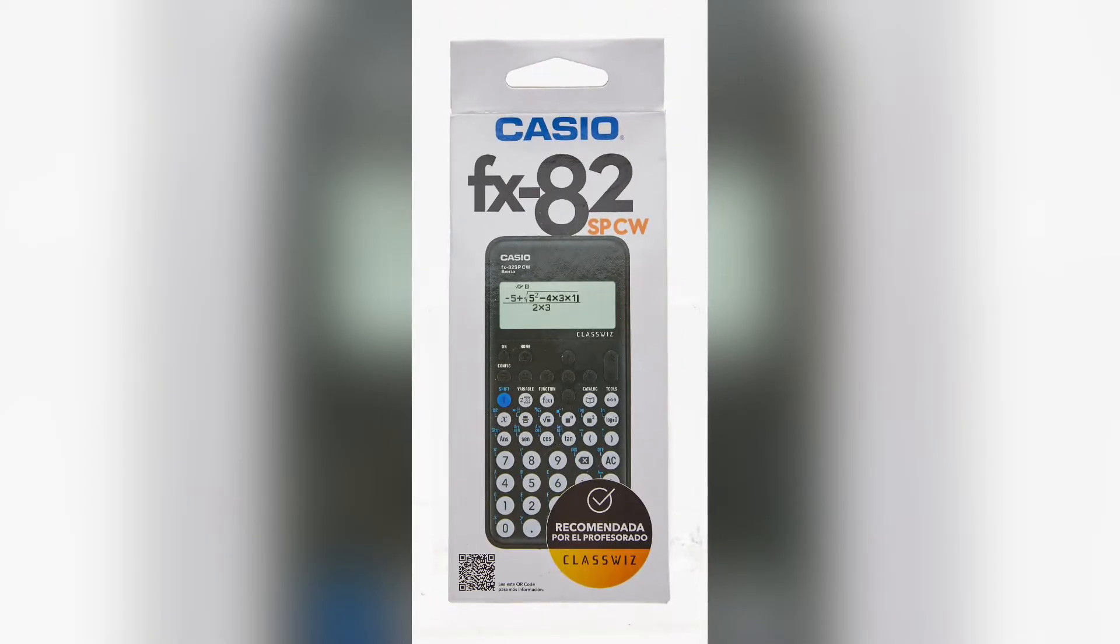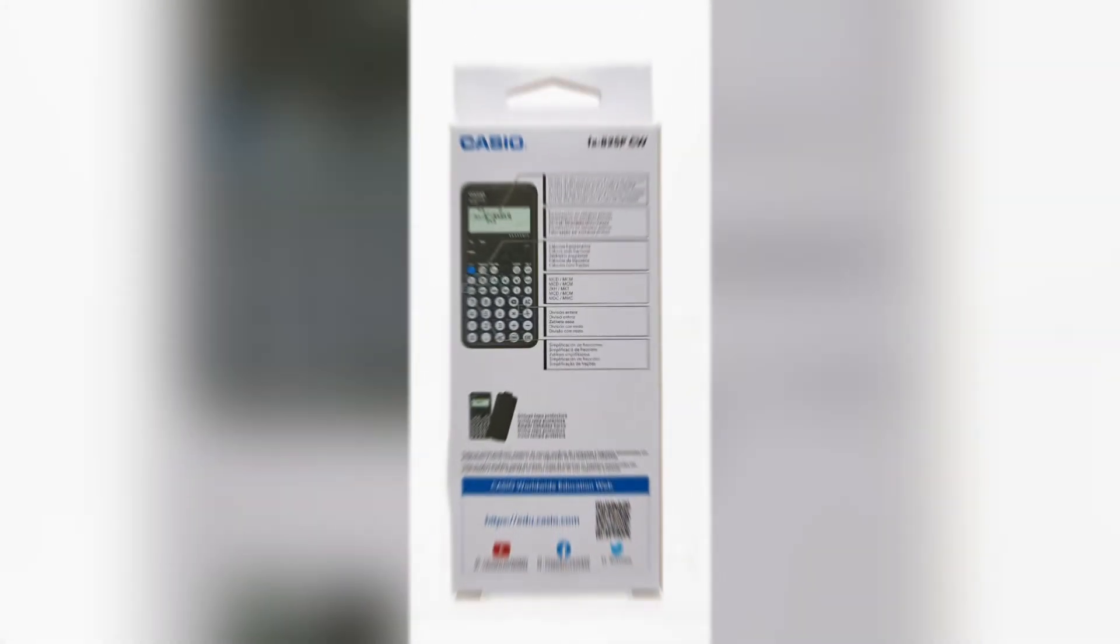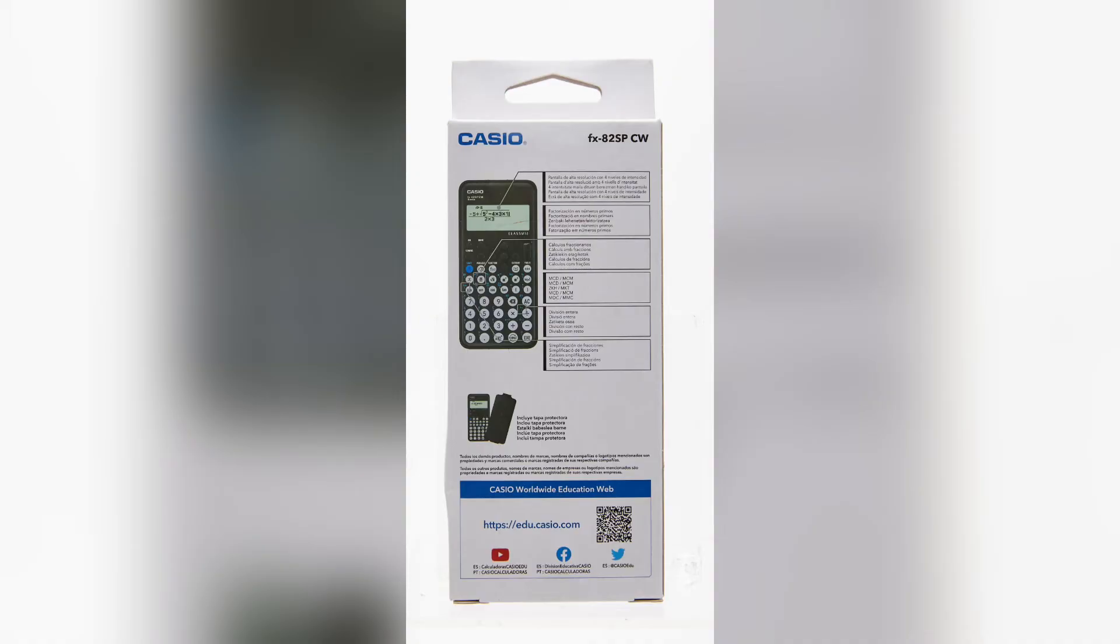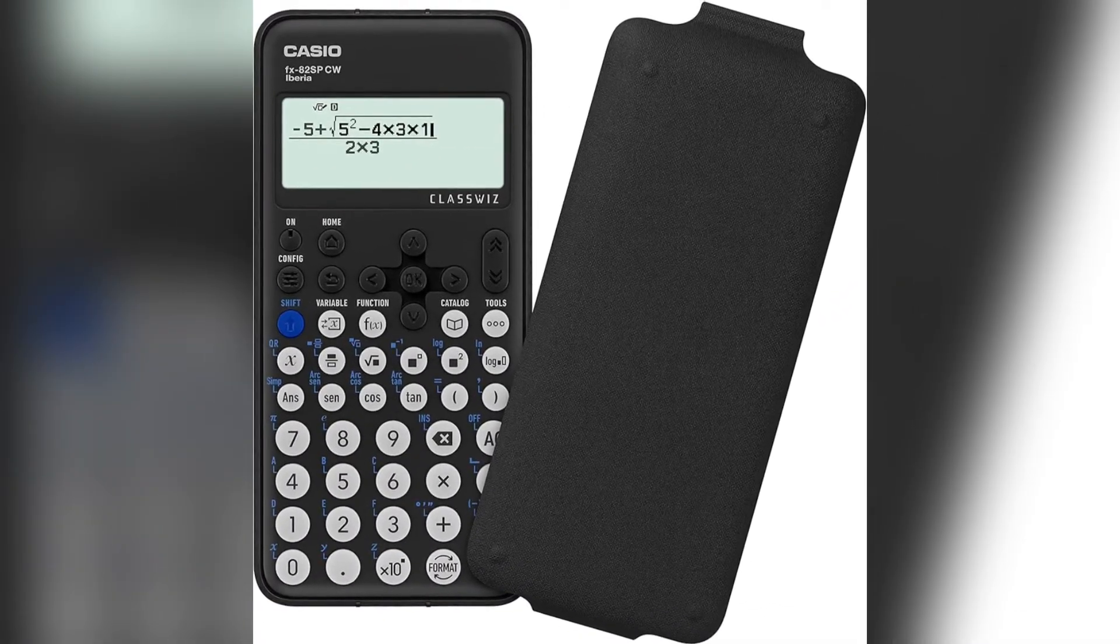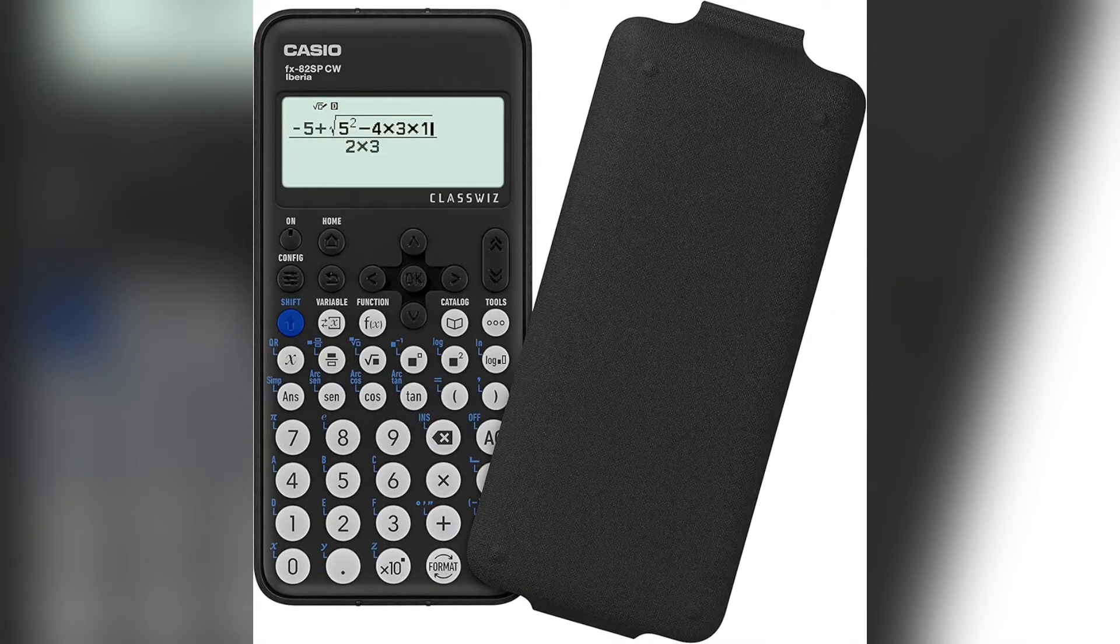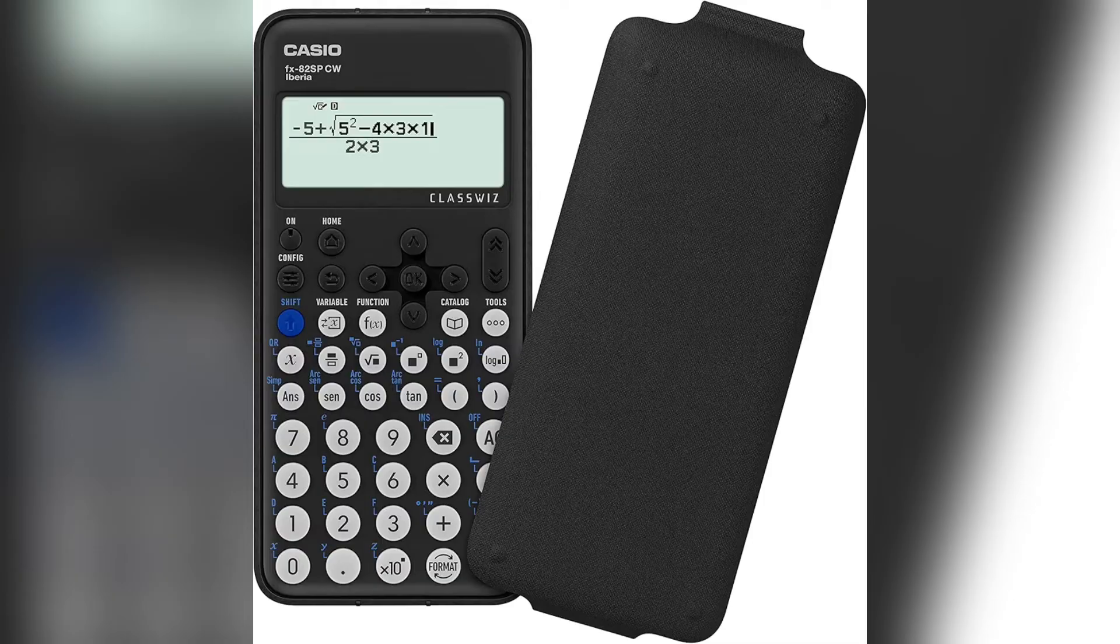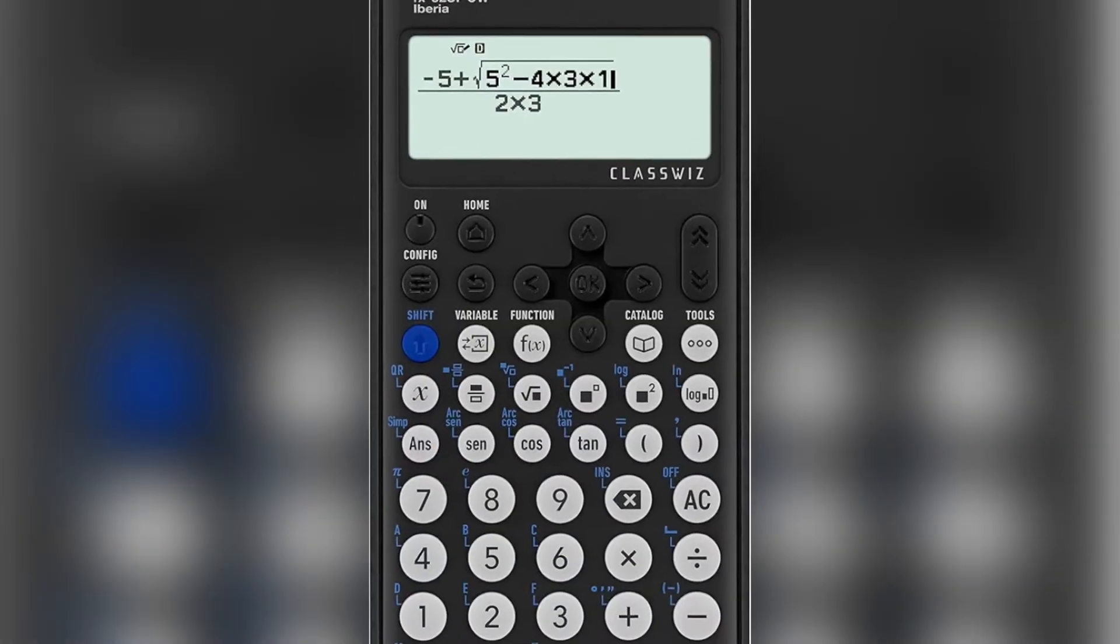Its dual-line display allows you to view both your equation and the answer simultaneously, making it easy to check your work. This model is also lightweight and portable, perfect for carrying to class or exams. If you're looking for something straightforward and affordable but still capable of handling the essential functions required for engineering coursework, the Casio FX-82 SPCW is a solid choice. Even on a budget, you won't be compromising on the quality and reliability you need to get through your courses with confidence.